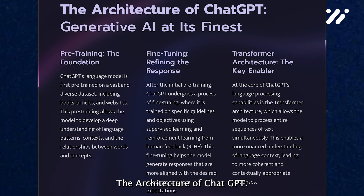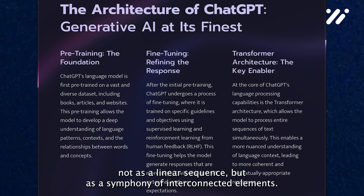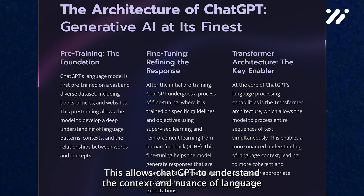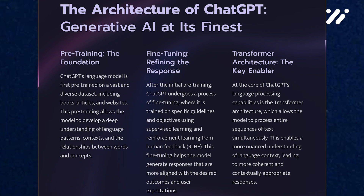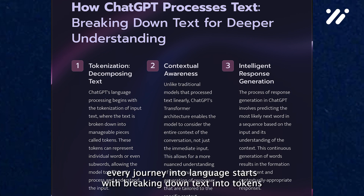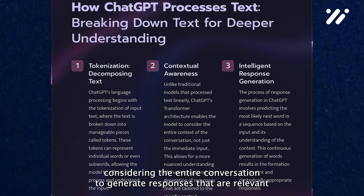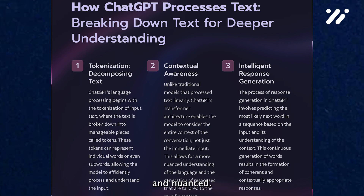The architecture of ChatGPT. At the heart of ChatGPT lies the Transformer — a groundbreaking architecture that processes words not as a linear sequence, but as a symphony of interconnected elements. This allows ChatGPT to understand the context and nuance of language on a level never before possible. Every journey into language starts with breaking down text into tokens, akin to understanding the building blocks of sentences. ChatGPT then weaves these tokens into a tapestry of meaning, considering the entire conversation to generate responses that are relevant and nuanced.